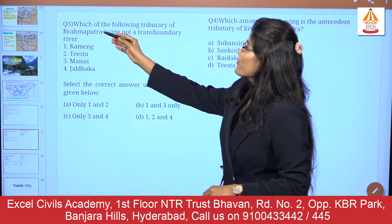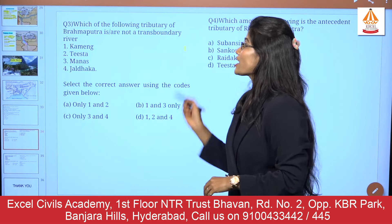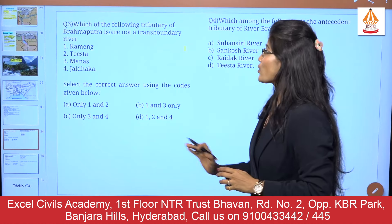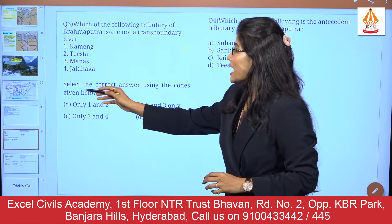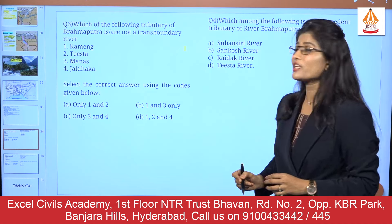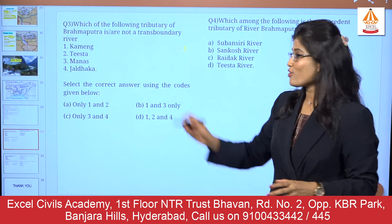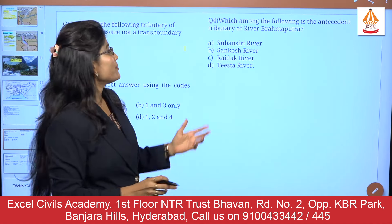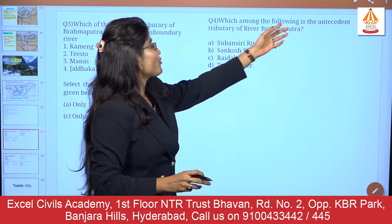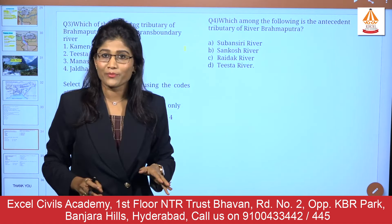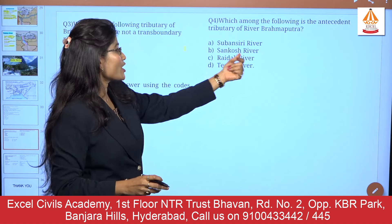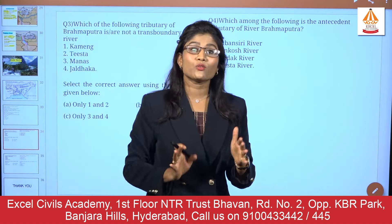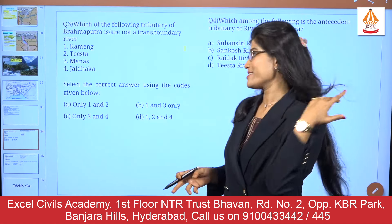Next question: which of the following tributaries of the Brahmaputra is/are not a transboundary river? Options: Kaming, Tista, Manas, Jal Dhaka. You need to memorize the seven major right bank tributaries. Next question: which among the following is the antecedent tributary of the river Brahmaputra? Options: Subansiri, Sankosh, Raidak, Tista. Also consider what the answer would be if Manas were added as an option.